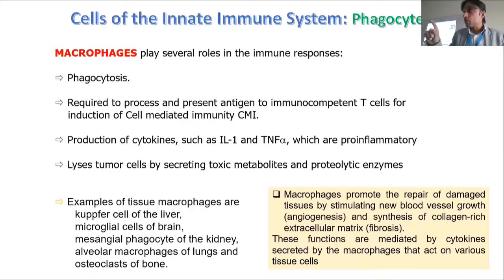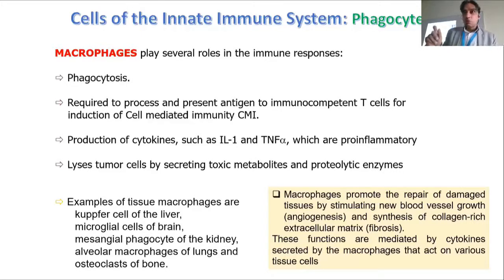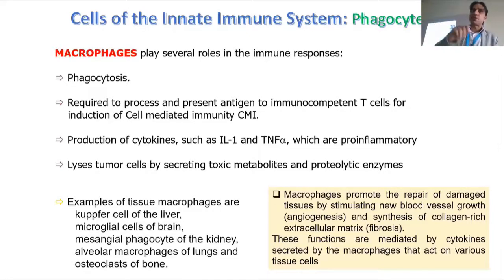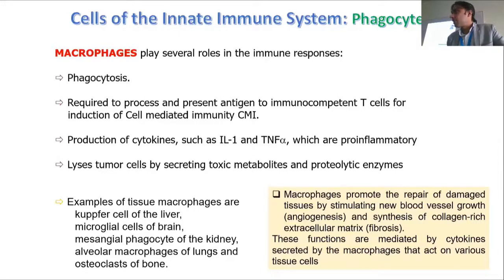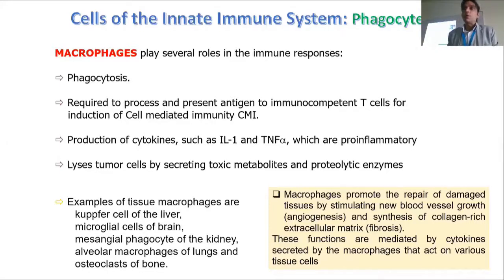One macrophage type cannot survive in all different organs simultaneously. A macrophage must be differentiated in different ways for different environments. When a macrophage differentiates to develop receptors and structures like a liver cell, it is called a Kupffer cell. When it differentiates to develop structures compatible with the brain, it is called a microglial cell — designed to live and survive within the brain.